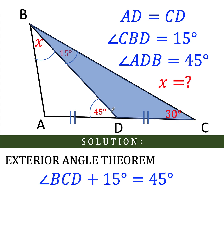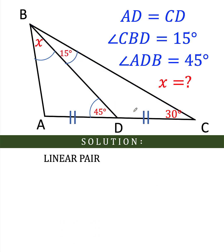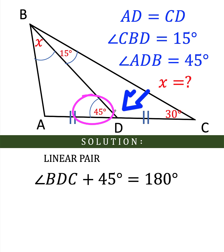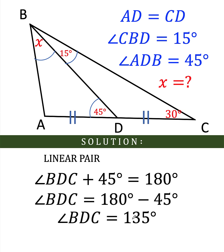Next, we can find the measure of this angle using the linear pair theorem or using the fact that the sum of the interior angles of a triangle is 180 degrees. So using linear pair theorem, we know that this angle with a measure of 45 degrees plus the measure of angle BDC is equal to 180 degrees. And therefore, the measure of angle BDC is equal to 135 degrees.